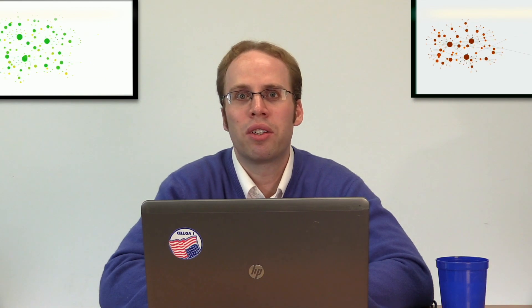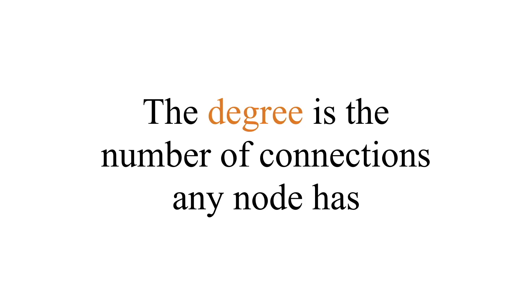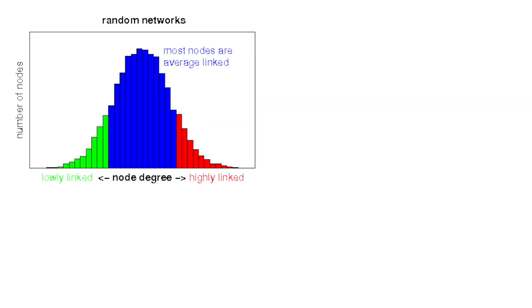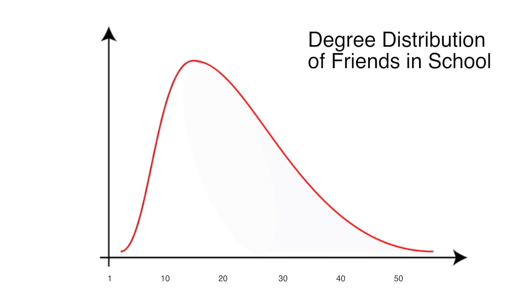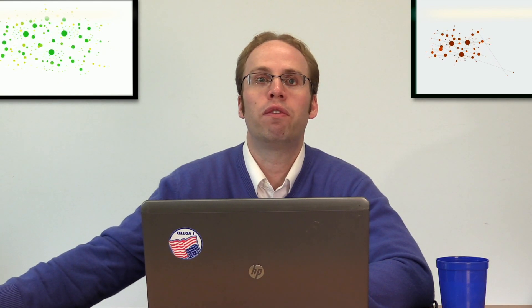The final measure — a basic diagnostic notion about how a network is wired — is degree distribution, which is also a nice segue to our second set of features: positional features. Degree refers to the number of connections any node has, and a degree distribution refers to that distribution. In many networks, like a friendship network, the average number of friends in a school network often hovers around 15 to 20 people, with a steep slope and a proportion of people having one, two, or three friends, while way out in the tail are people with like 50 friends because they're super popular.